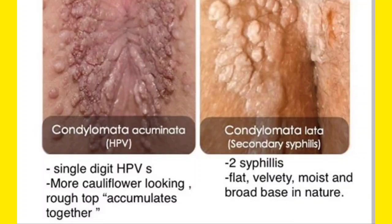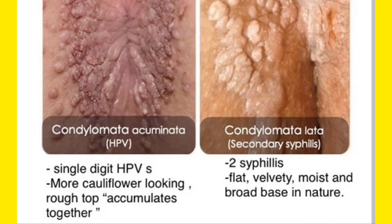Condyloma lata is flat, velvety, and moist in nature. It is associated with secondary syphilis and is a moist, flat lesion. In contrast, condyloma accumulata has a cauliflower-like rough top and accumulates together — caused by HPV. Both are different, so let us learn the difference in a table for clarity.